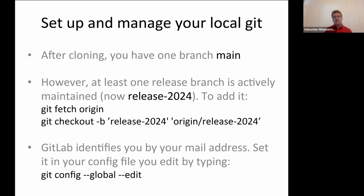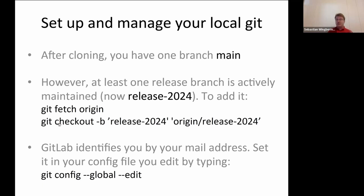If you haven't worked with GROMACS at all, the first thing is to go to our GitLab page and clone the repository. After that, you will have a folder called GROMACS, which is a Git repository on your local computer containing exactly one branch: main. But main is only the branch where we develop the future release. We also have several active releases that we maintain, and you can add those branches using 'git fetch origin' — which retrieves all information about the repository from the remote server — followed by a 'git checkout' command to make a copy of the release branch you want to contribute to.